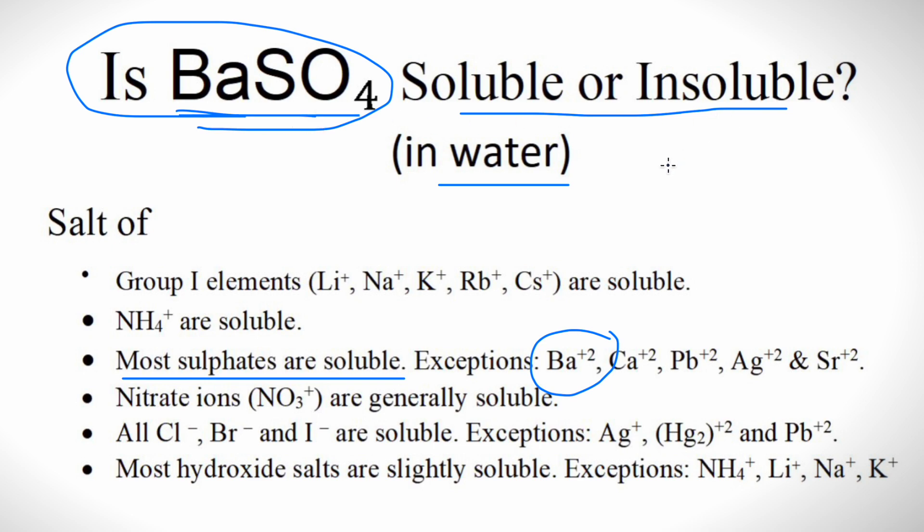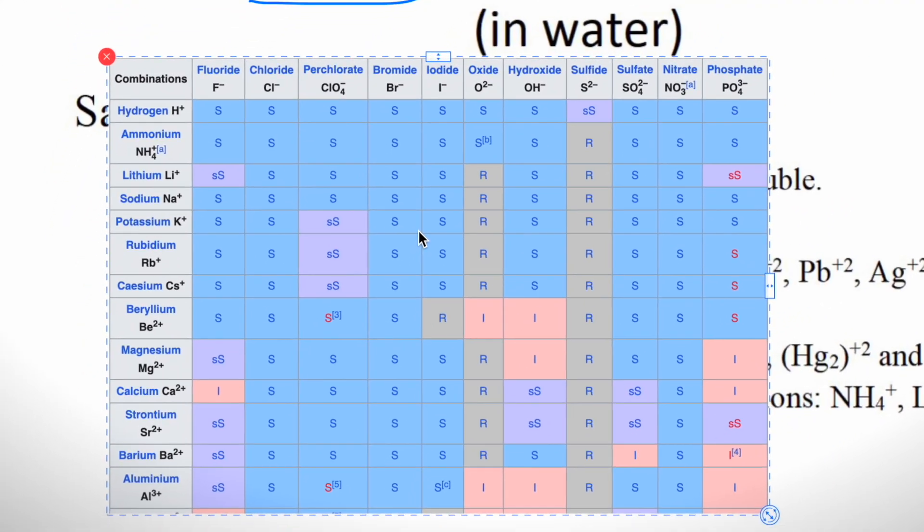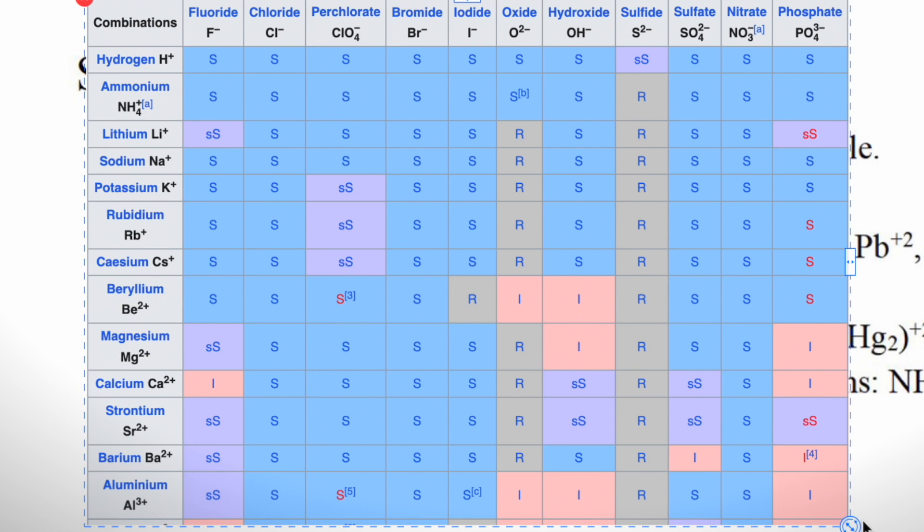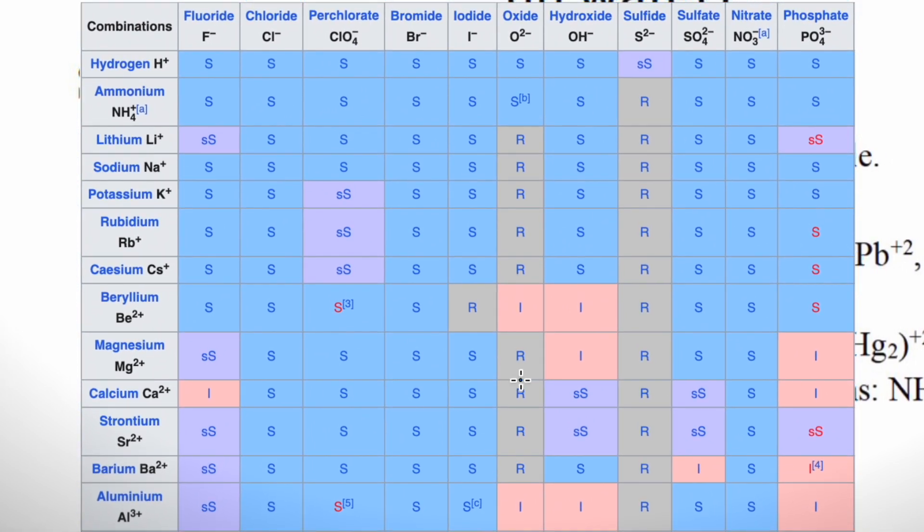We can also look at the solubility chart. Here is a portion of it. If we look down, we can see this is barium, Ba2+. And if we go across the table, we can see this is the sulfate ion.